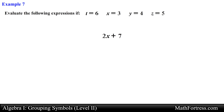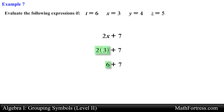So let's simplify the expression 2x plus 7. We substitute x with 3 using parentheses. Now we simplify: we first take care of the product 2 times 3 which reduces to 6, and then we add 7 to that which reduces to 13.